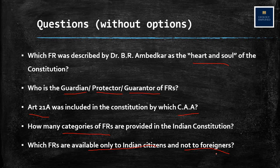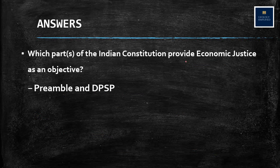Now you can pause here and answer for yourself, or we will jump on to the answers. Let's see which parts of the Indian constitution provide economic justice as an objective. Economic justice is provided in the Preamble and DPSP — that is, Directive Principles of State Policy.